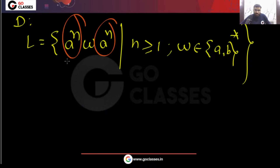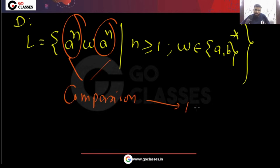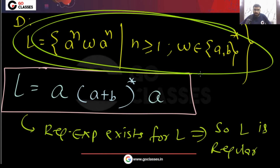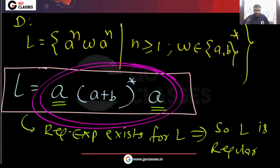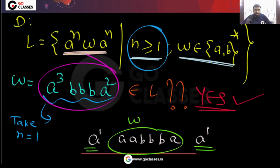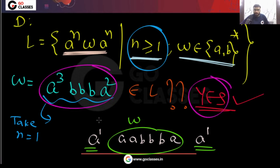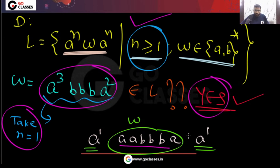Please don't conclude that because there is a comparison of a^n with a^n, L is not regular. Understand the language first — which strings belong to L, which don't. All strings starting with 'a' and ending with 'a' belong to L. Just take n = 1, write the string as a^1 w a^1, and you can see it belongs to L.